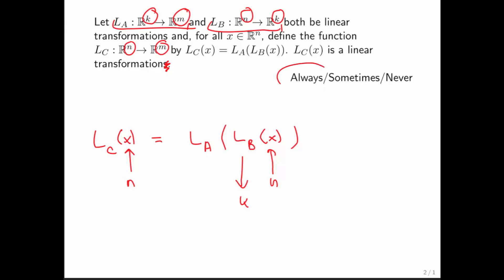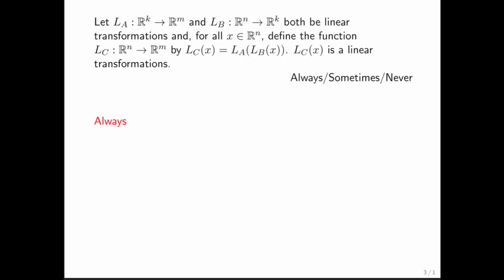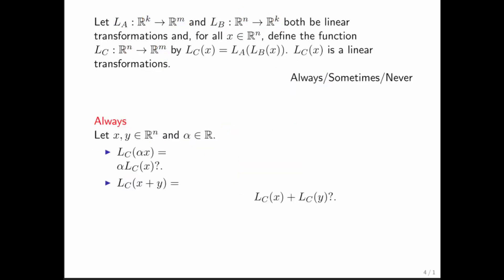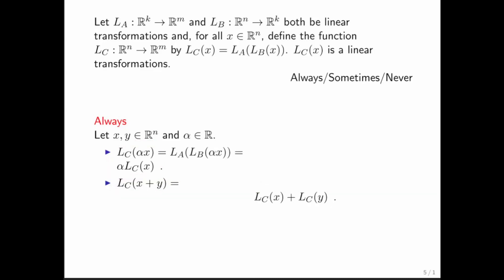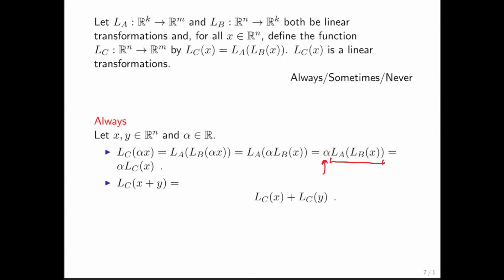We're back. Notice that it's always a linear transformation. Why is it always a linear transformation? We have to ask these two questions: is it the case that if you scale the vector first and then transform it, you get the same vector as if you first transform it and then scale it? If you plug this in, you know the definition of LC, you know that L of B is a linear transformation so you can bring the alpha out, and then you know that L of A is a linear transformation and therefore you can bring the alpha out. And then you recognize that this is just that.